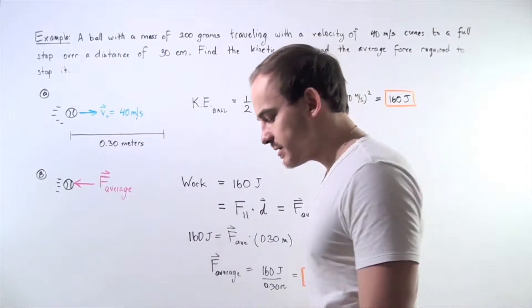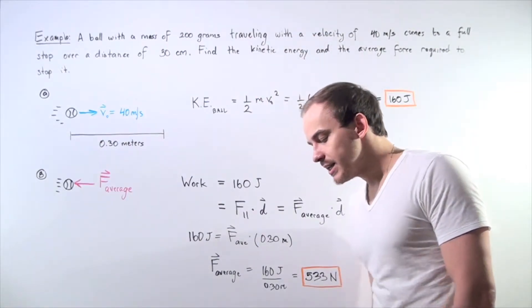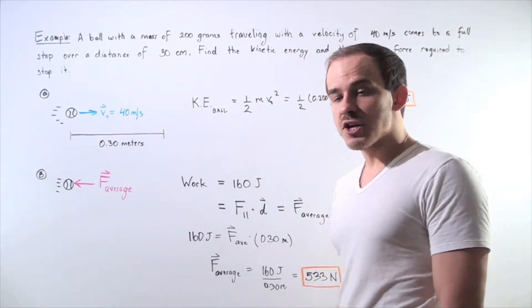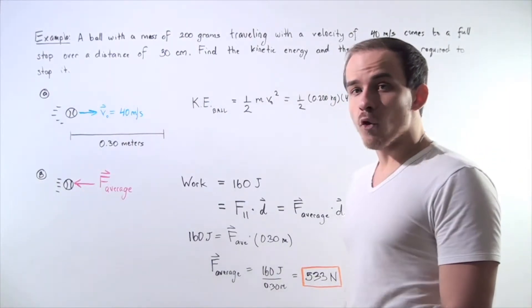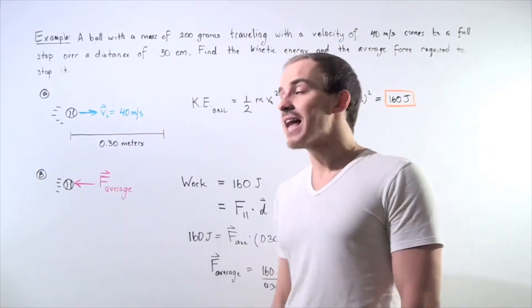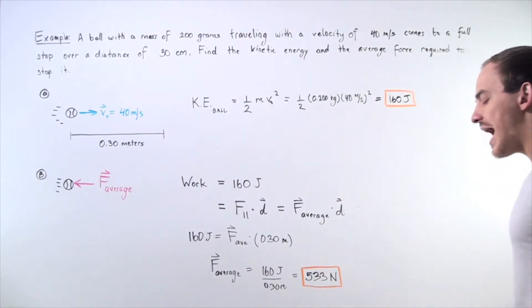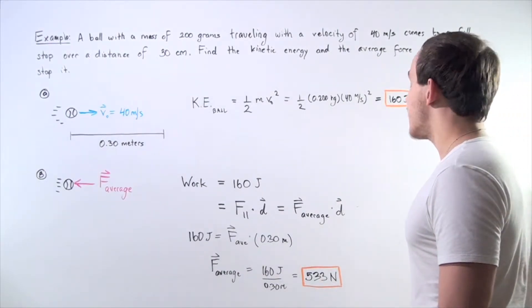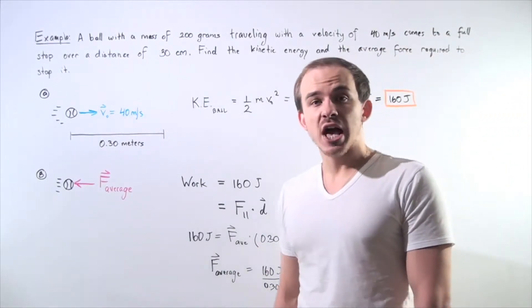We want to find two things: calculate the initial kinetic energy of the object and the average net force acting on the object to stop it.